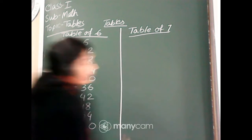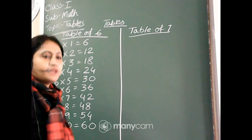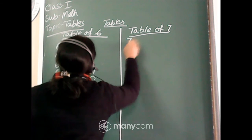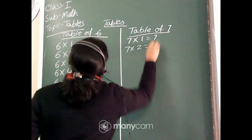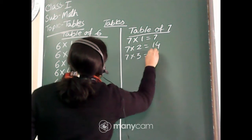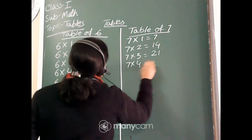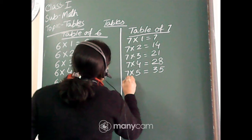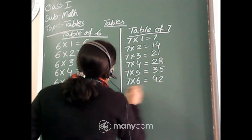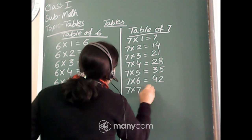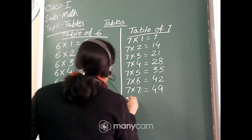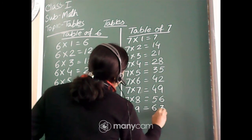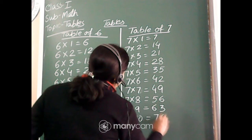I hope you have written. Few students have written. Who have still not written in their notebook, they will note down. If you have already written, then also you can write in your notebook and learn all the tables. Now, table of 7: 7 ones is 7. 7 twos are 14. 7 threes are 21. 7 fours are 28. 7 fives are 35. 7 sixes are 42. 7 sevens are 49. 7 eights are 56. 7 nines are 63. 7 tens are 70.